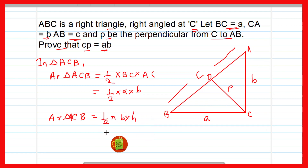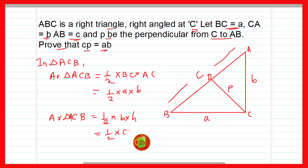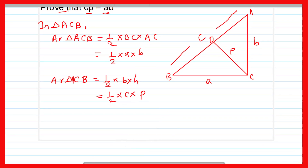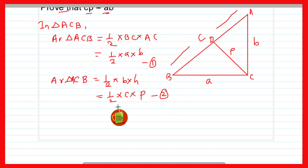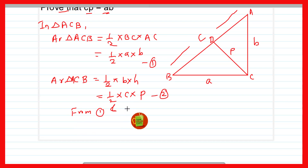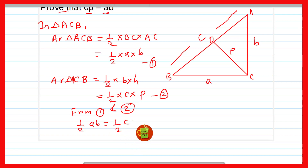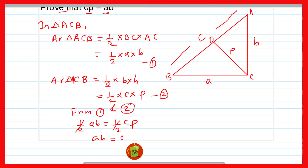Area of triangle ACB = ½ × base × height = ½ × AB × CD = ½ × c × p. This is equation (2). From equations (1) and (2): ½ab = ½cp. The halves cancel, giving ab = cp, which means CP = ab/c. Hence it is proved.